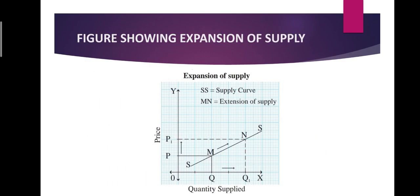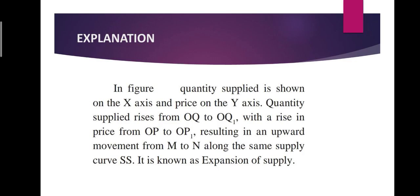Looking at the figure: on the OX axis, quantity supplied is given, and on the OY axis, prices are given. At price OP, the quantity supplied was OQ. When price increased from OP to OP1, quantity supplied also increased from OQ to OQ1. So we get an upward-sloping SS curve, and the movement from M to N along the same supply curve SS represents expansion of supply.